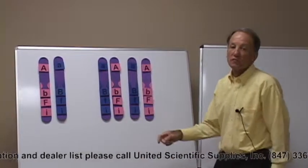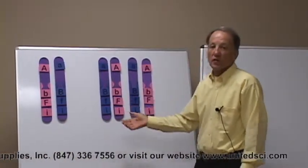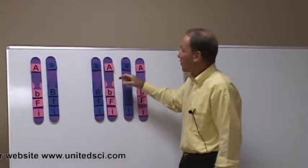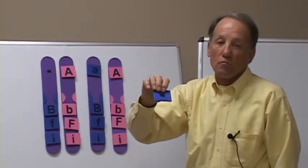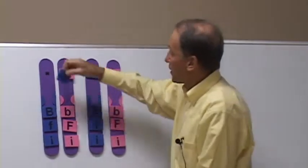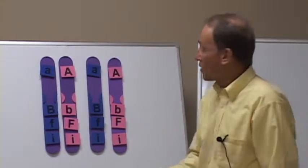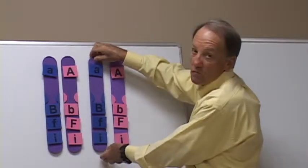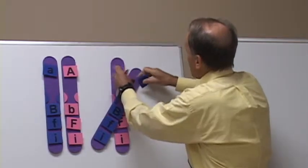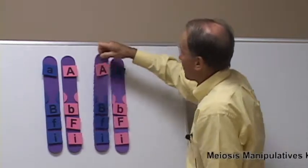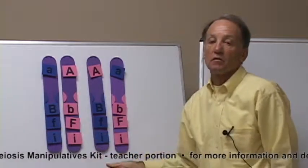The kit's crossover demonstration set has all the features of the other sets but in addition has removable alleles. The alleles can be removed because they have velcro on the back and can be reattached. This allows you to show crossing over. Let's do a quick crossover between these two chromatids. We'll cross them over and swap the alleles forming chromatids with both maternal and paternal alleles.